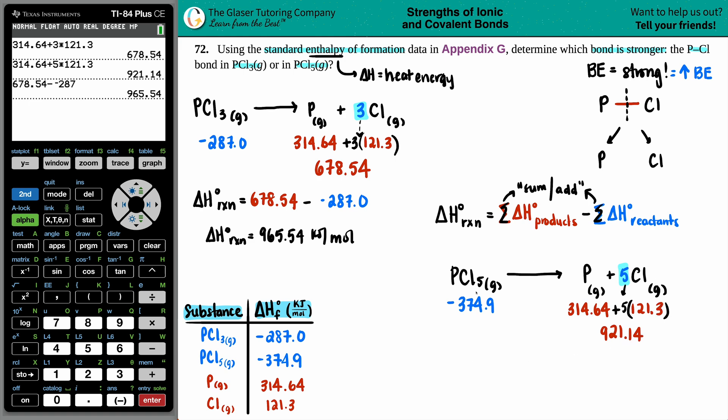Let's find out the delta H for the PCl5. Delta H for the entire reaction equals products minus reactants: 921.14 minus a negative 374.9. Delta H for this whole reaction is 1296.04 kilojoules per mole.